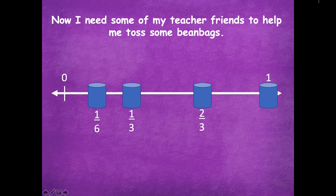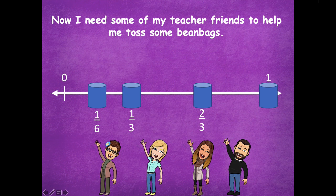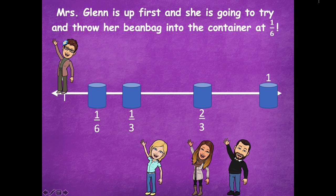Now I need some teacher friends to help me toss some bean bags. Here I have Mrs. Glenn, our principal; Mrs. Holt, our computers teacher; Mrs. McDougall, our PE teacher; and Mr. Walker, our fourth and fifth grade math teacher. Mrs. Glenn is up first and she is going to try and throw her bean bag into the container at one-sixth. She nailed that one too! That one was closest, so it's probably easier to toss the bean bag in — it's closer to zero.